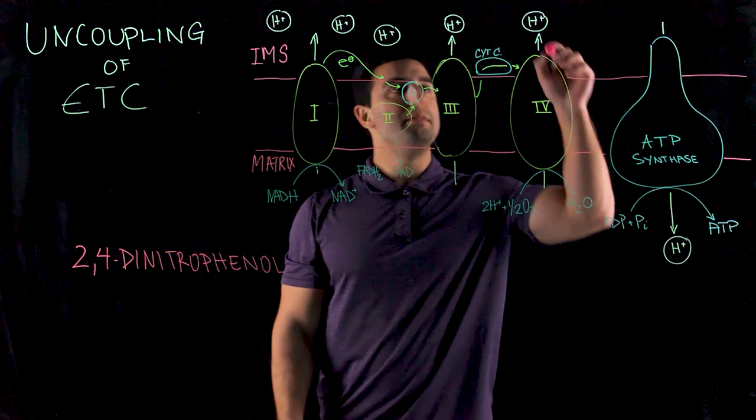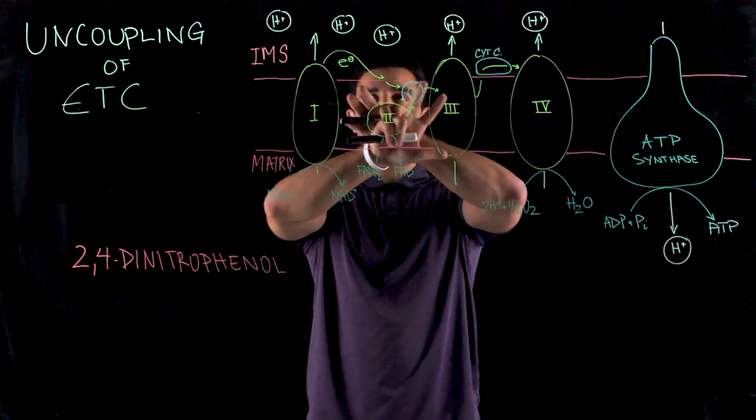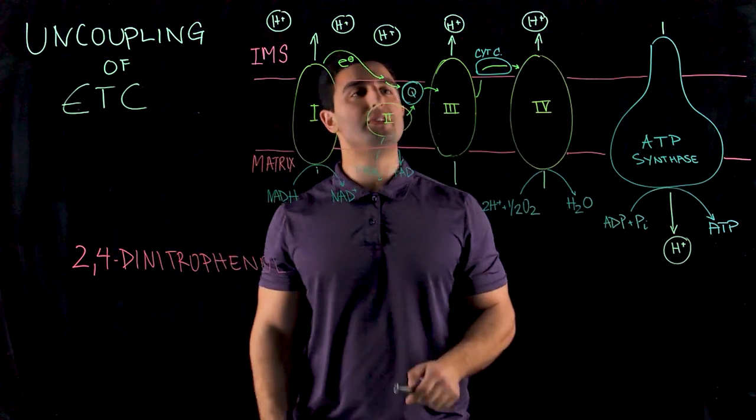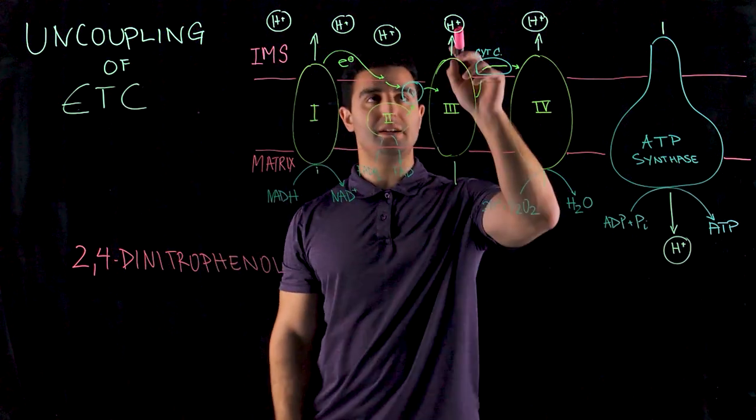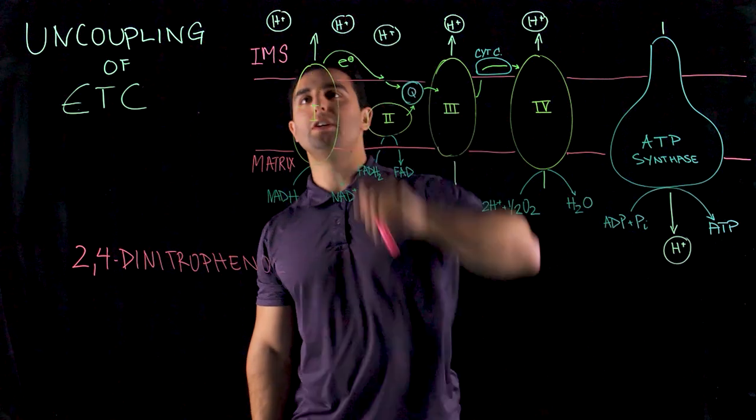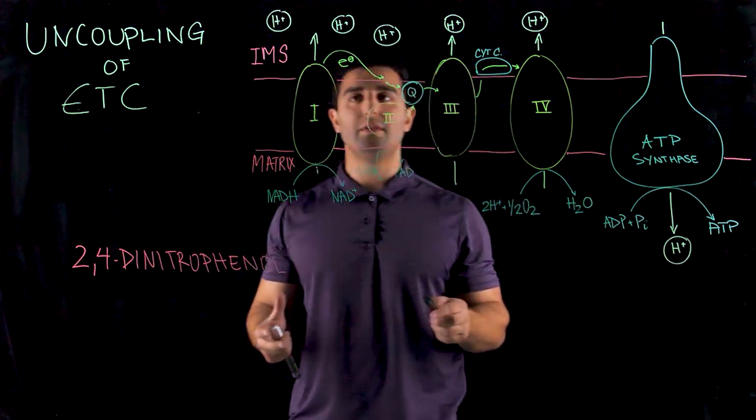So what does that mean? This leads to a lack of chemiosmotic gradient created. If you prevent this connection to take place, these hydrogens don't go into the inner membrane space to create this chemiosmotic gradient.